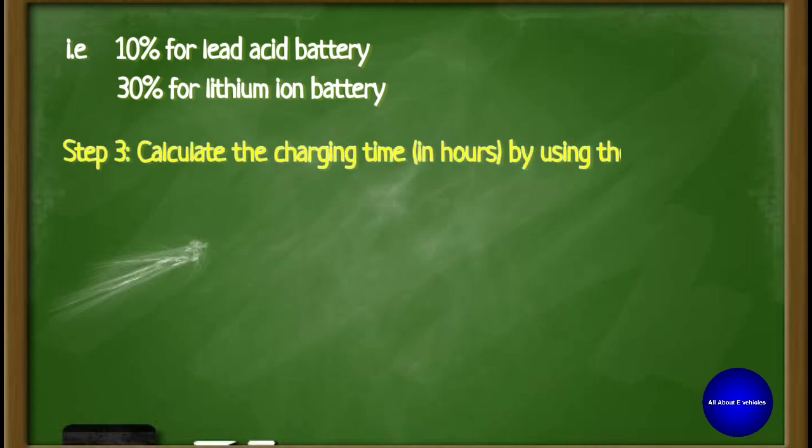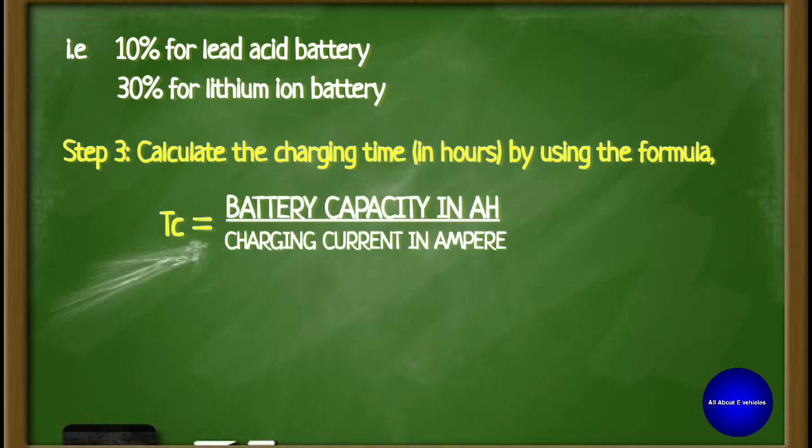Step 3: Calculate the charging time in hours by using the formula. Tc is given by the ratio between battery capacity in ampere-hours and the charging current in amperes.